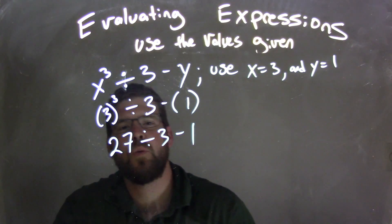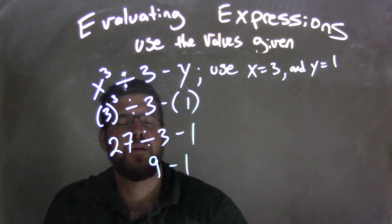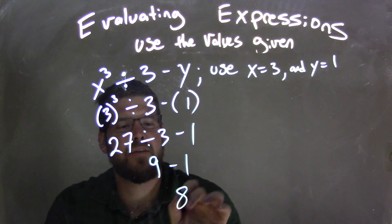So now we need to deal with 27 divided by 3. Well, 27 divided by 3 is 9, and we bring down the minus 1. 9 minus 1 comes out to be 8, and there's our final answer.